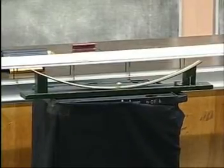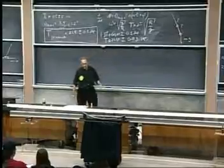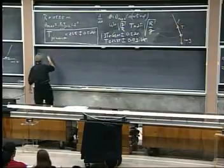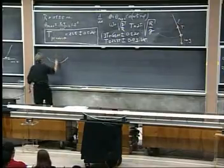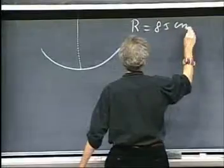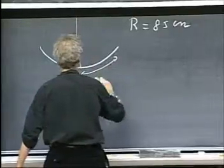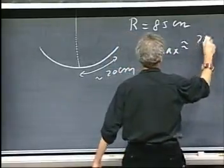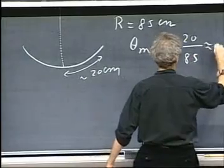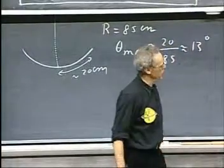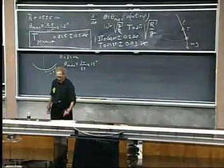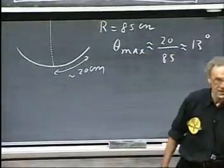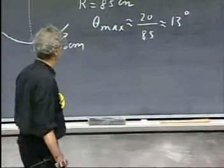So, we can calculate what the maximum angle is. Radius is 85 centimeters. And the arc to the edge is about 20 centimeters. So, theta maximum is roughly 20 divided by 85. And that is something like 13 degrees. 13 degrees is not a bad situation because the difference between the cosine theta and one minus theta squared over two is less than a hundredth of a percent.